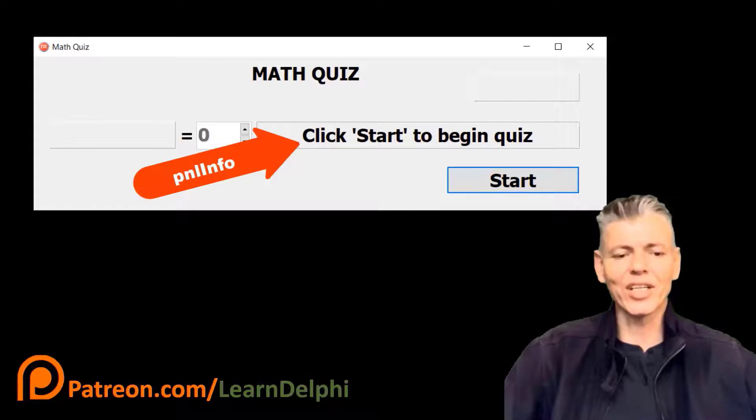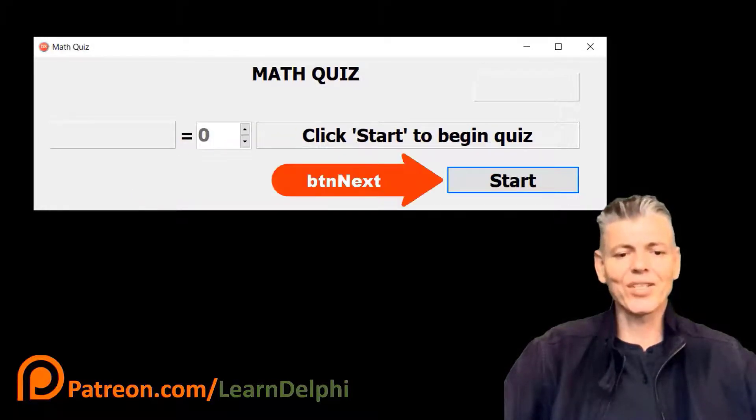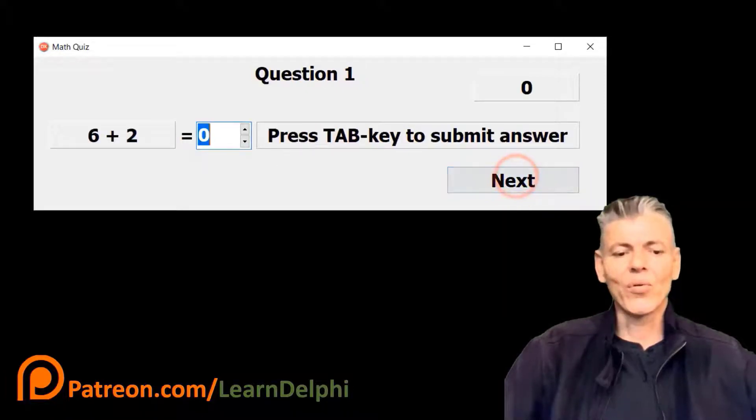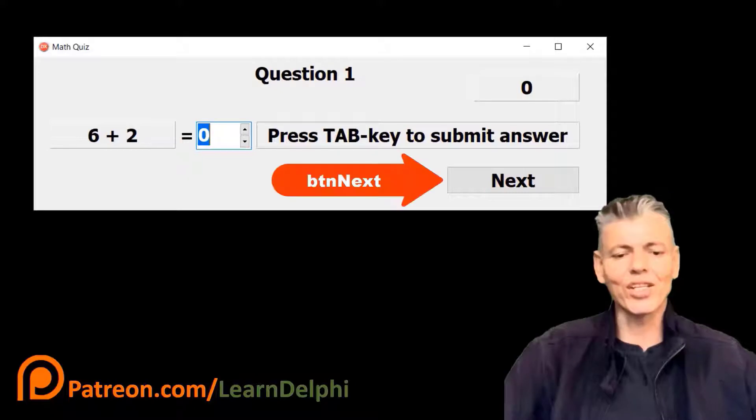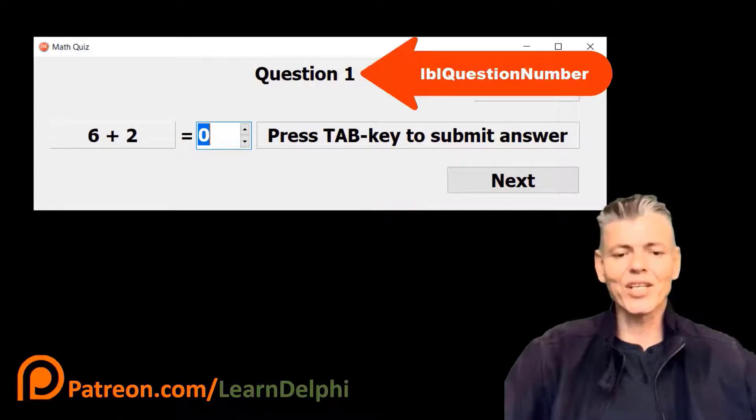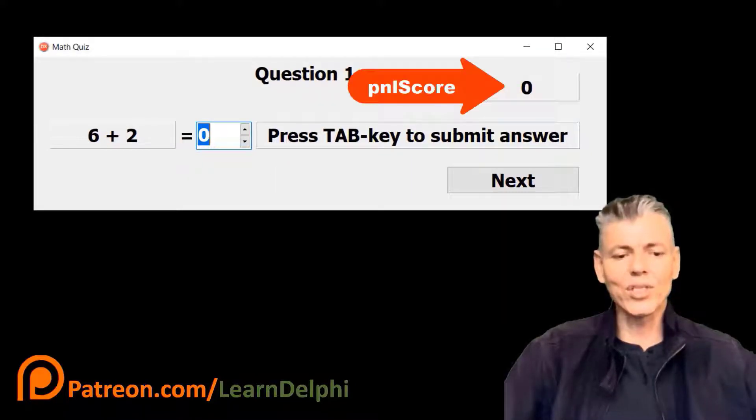This panel gives you some additional information, like how to submit your answer. The button's caption is start when you run the project. You must click the button to start the quiz. When you click start, the button's caption changes to next. This label displays the question number, and the score starts at zero. That is the part we programmed last time.